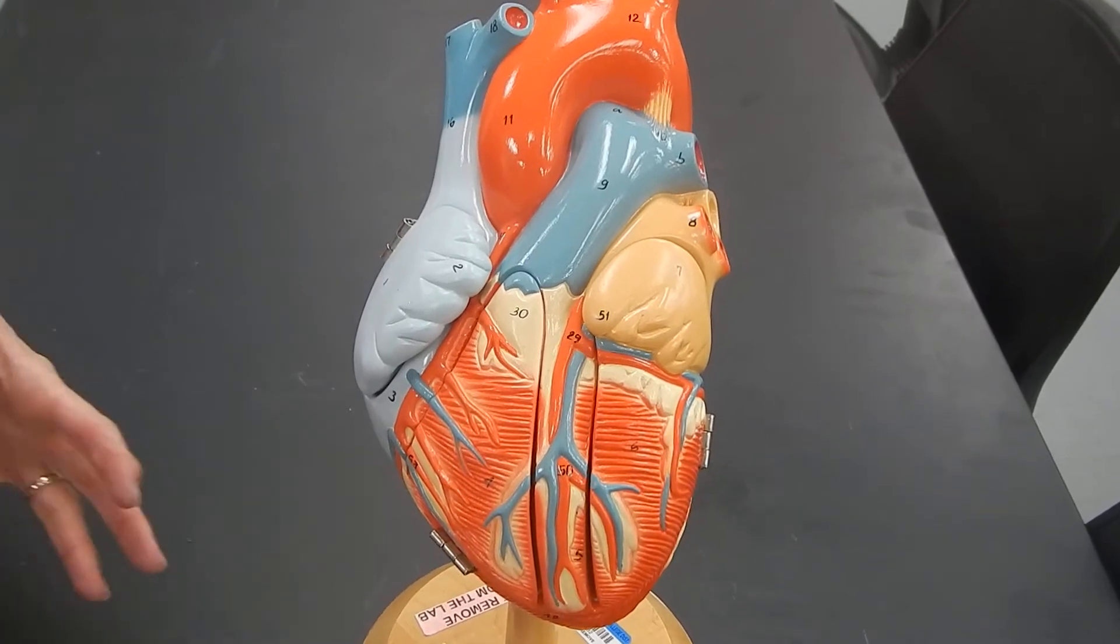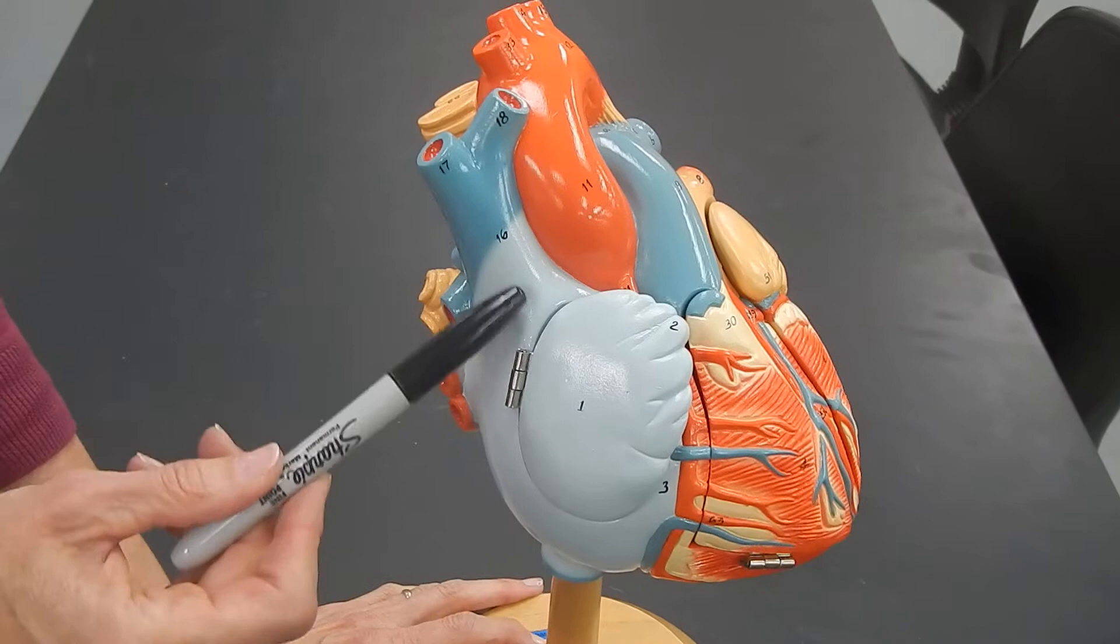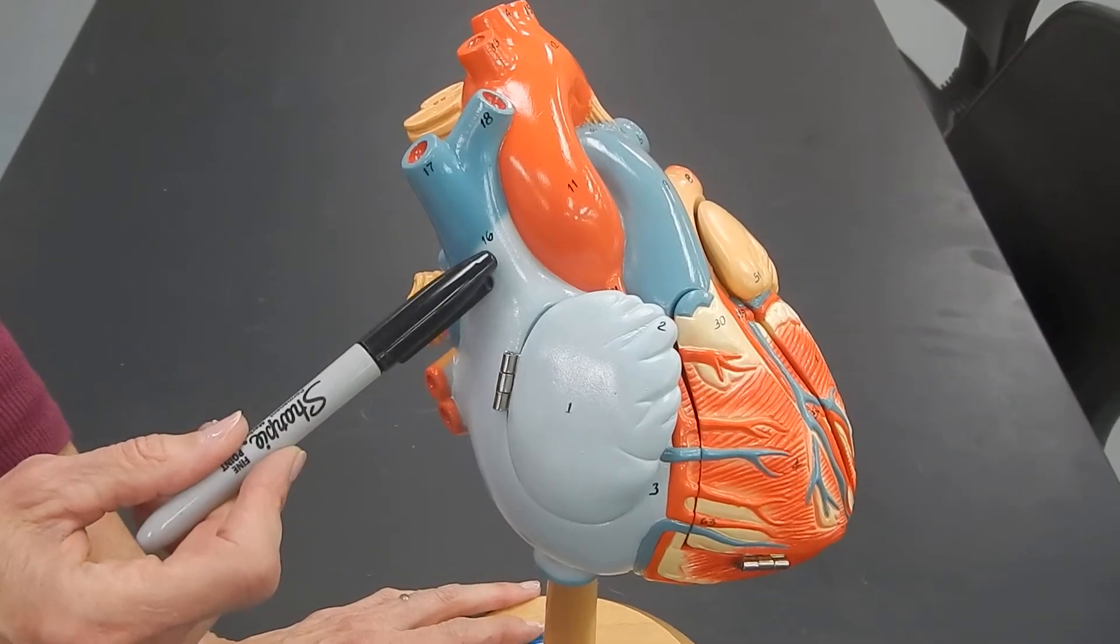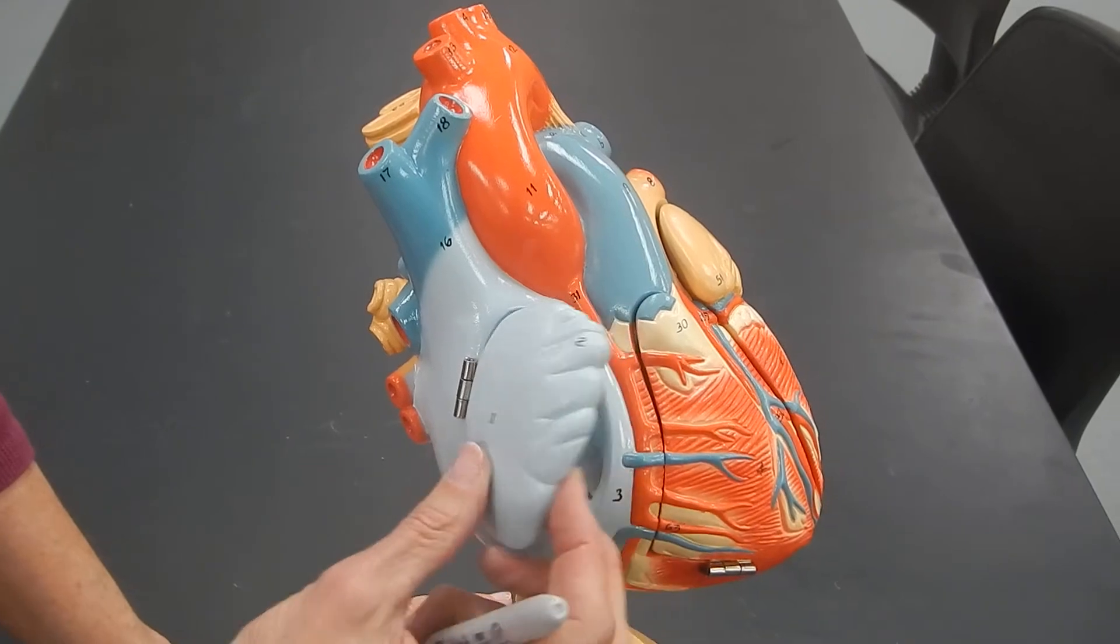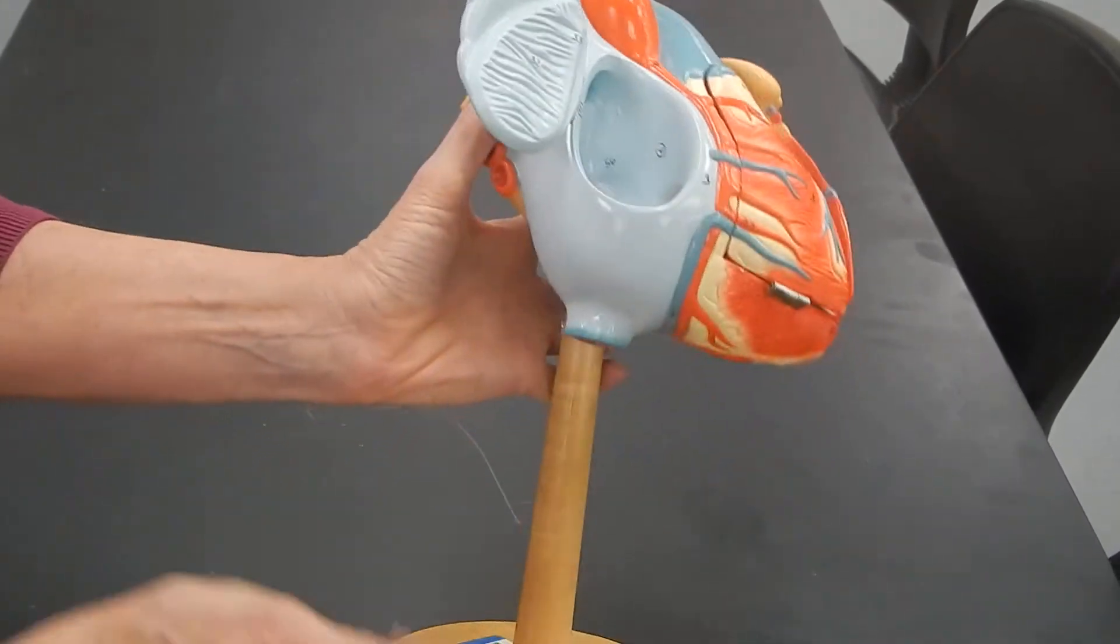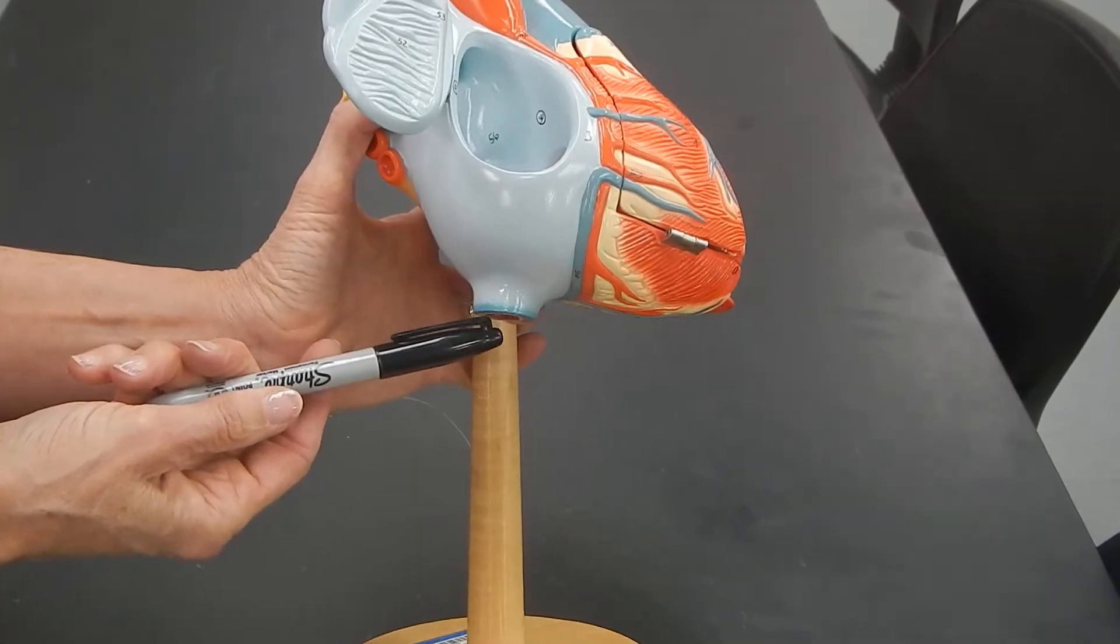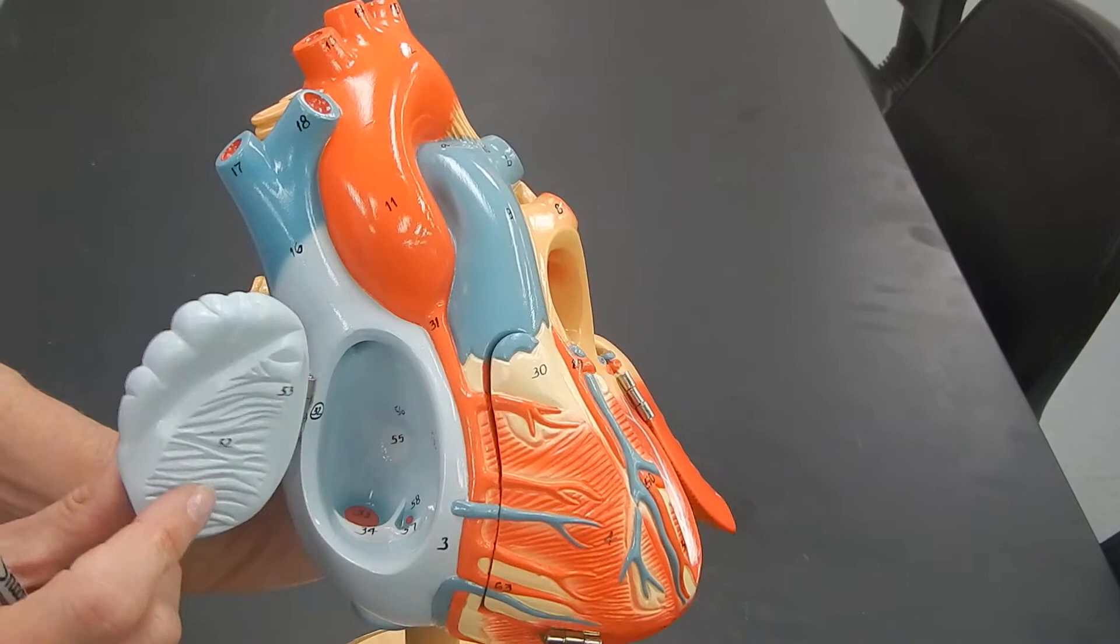When we look at the blood vessels to the heart, this large blue blood vessel is the superior vena cava, and it's bringing blood into the right atrium. Down here, we have got the inferior vena cava, also bringing blood into the right atrium.